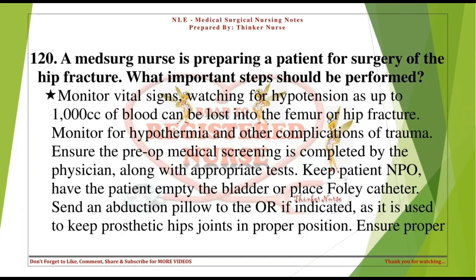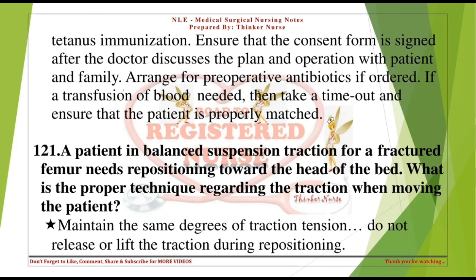A med-surg nurse is preparing a patient for surgery of a hip fracture. Important steps include: monitor vital signs, watching for hypotension as up to 1,000 cc of blood can be lost into the femur or hip fracture; monitor for hypothermia and other complications; ensure pre-op medical screening is completed; keep the patient NPO; have the patient empty the bladder or place a Foley catheter; send an abduction pillow to the OR if indicated; ensure proper tetanus immunization; ensure consent form is signed; arrange for pre-operative antibiotics if ordered; and ensure proper blood matching if transfusion is needed.